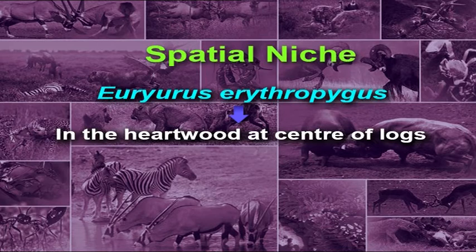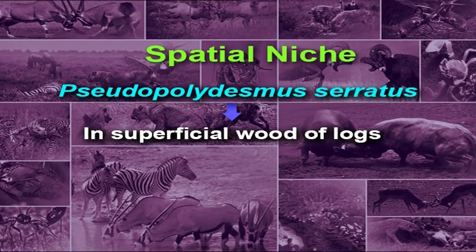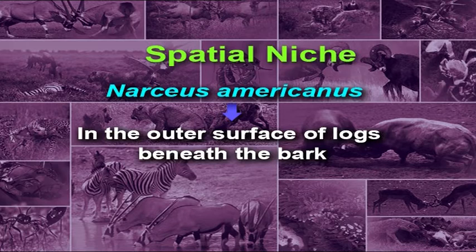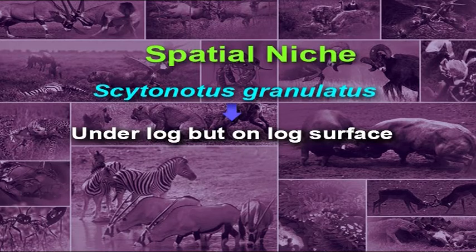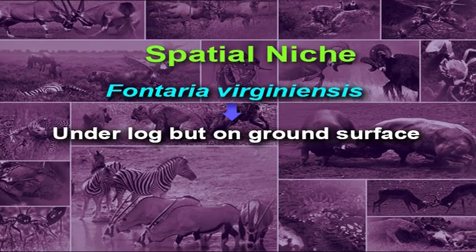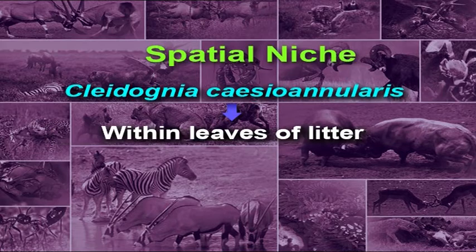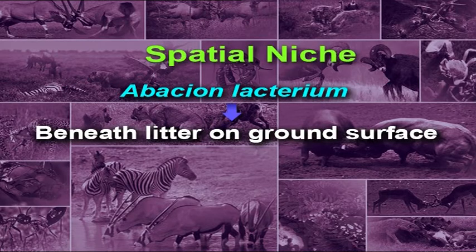The millipede species occupy distinct micro-habitats: Ururus erythropygus predominates in the heartwood at the centre of logs; Pseudopolydesmus serratus in superficial wood of logs; Narceus americanus on the outer surface of logs beneath the bark; Synctonotus granulatus under logs but on the log surface; Fontaria virginica under logs but on the ground surface; Cladognatha in leaves of litter; and Abacion lactarium beneath litter on the ground surface.